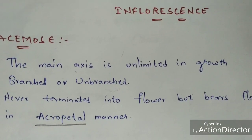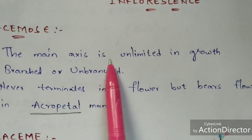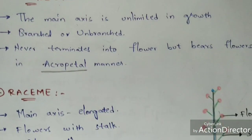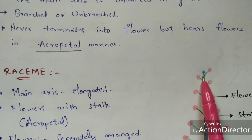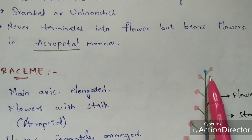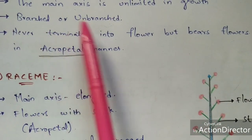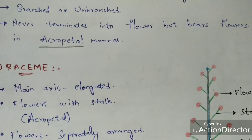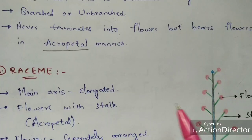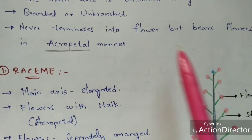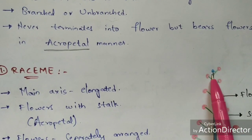First, you have to know what is meant by racemose inflorescence. The main axis will be unlimited in growth. As you can see in this diagram, the blue color one is the main axis, and there will be unlimited growth in this main axis. It may be branched or unbranched, and it never terminates into a flower — the main axis will not form a flower.